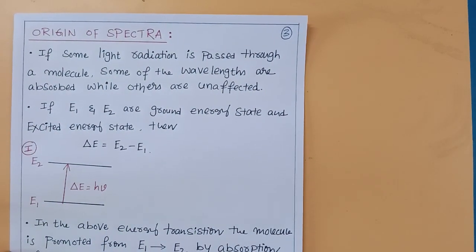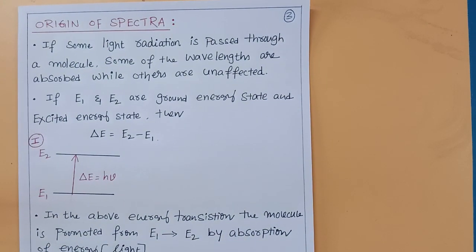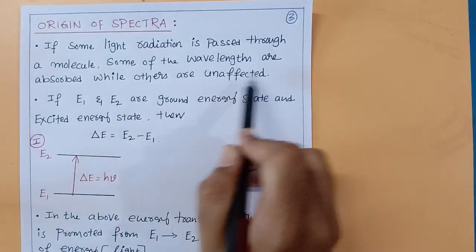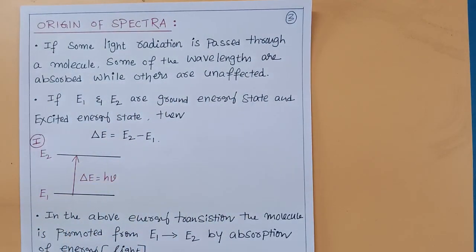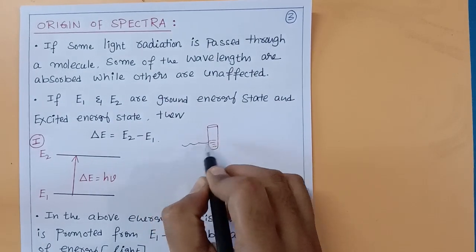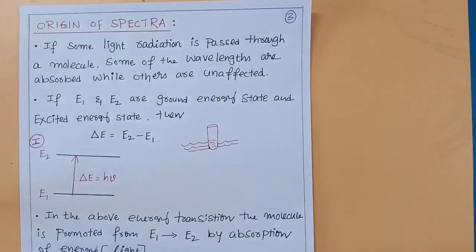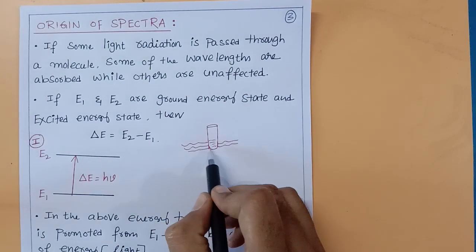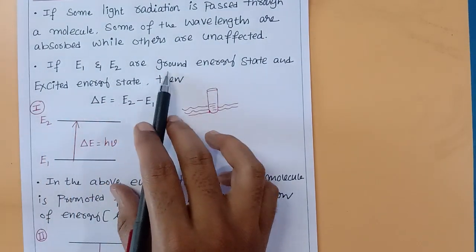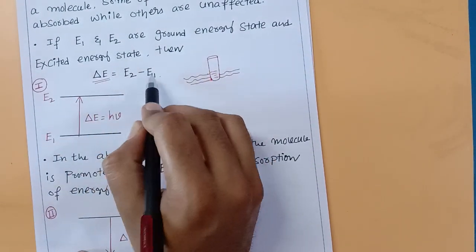Now let's look at the origin of spectra. If some light radiation is passed through a molecule, some of the wavelengths are absorbed while others are unaffected. If E1 and E2 are the ground energy state and excited energy state, then delta E — the energy difference — will be E2 minus E1.